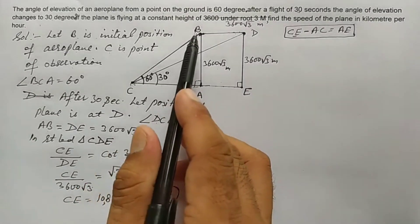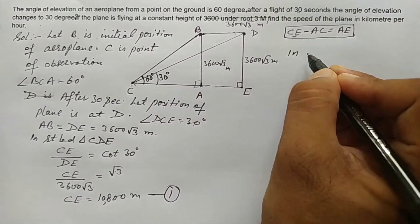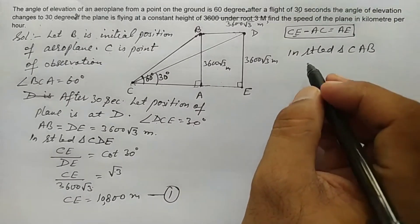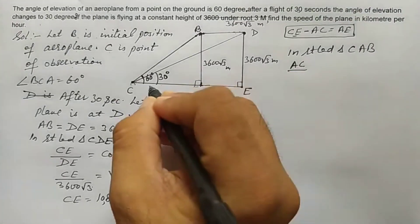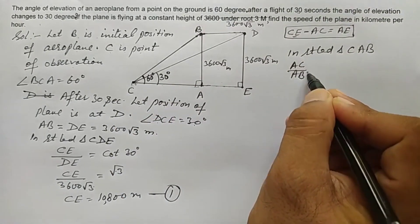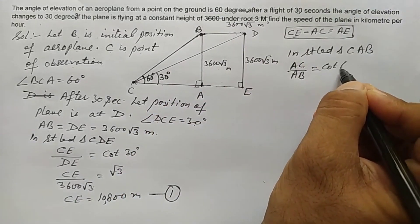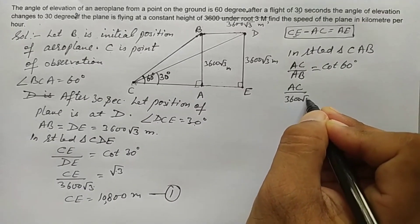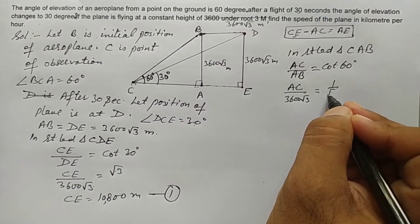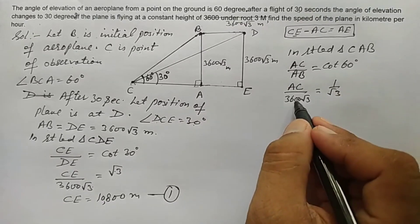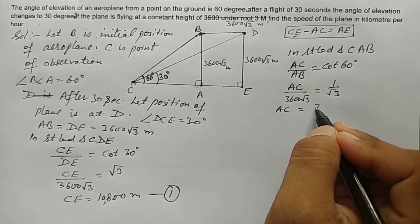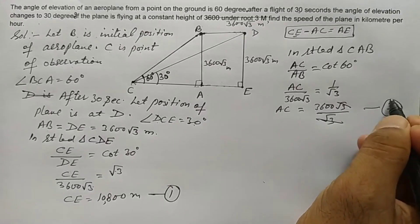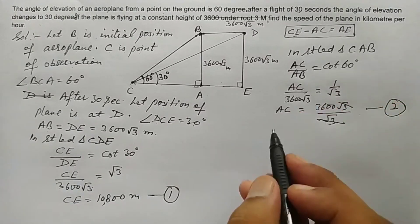Similarly, in the small right angled triangle CAB, we find AC. We have AC over AB equals cot 60. AB is 3600√3, and cot 60 equals 1/√3. Cross-multiplying: AC equals 3600√3 ÷ √3 equals 3600 meters.